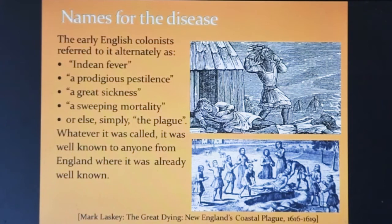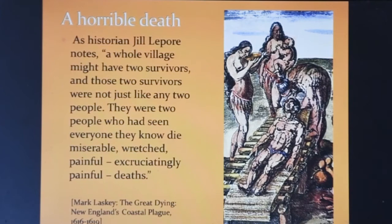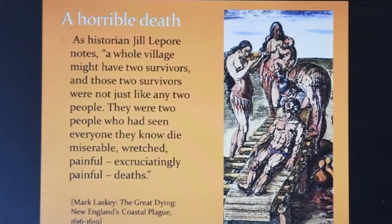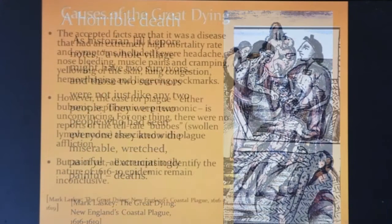The early English colonists had many names for the outbreak, something for which they had been familiar with in England. As historian Jill Lepore notes, a whole village might have two survivors, and those two survivors were not just any two people. They were two people who had seen everyone they knew die miserable, wretched, excruciatingly painful deaths.